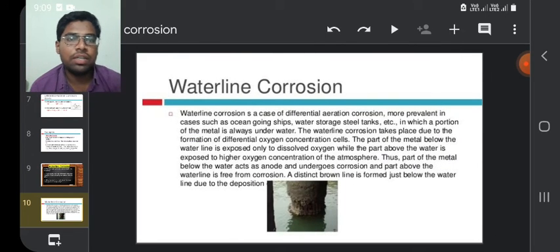Waterline corrosion is a case of differential aeration corrosion, more prevalent in cases such as ocean-going ships, water storage steel tanks, etc., in which a portion of the metal is always underwater. The waterline corrosion takes place due to the formation of differential oxygen concentration cells.